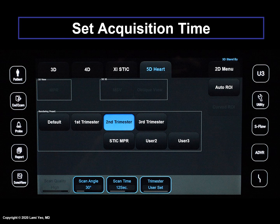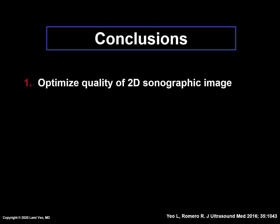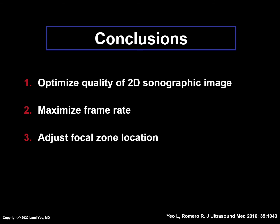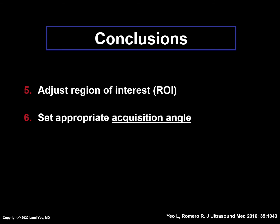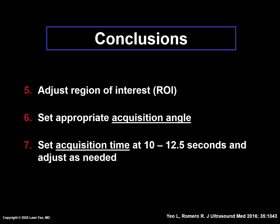This screen panel on an ultrasound machine shows where the volume acquisition time is adjusted — here it has been set for 12 seconds. In conclusion, before obtaining STIC volume datasets for the FINE method, it is essential to enhance the quality of the two-dimensional sonographic image. One should maximize the frame rate by decreasing the depth, sector width around the heart, and the number of focal zones to a single zone. The focal zone should be placed at or below the level of the fetal heart in the imaging window, and the cardiac image should be magnified to improve visualization of the cardiac anatomy. The region of interest box should be as small as possible to maximize the frame rate and improve temporal resolution. One should set the appropriate acquisition angle, and we recommend setting the acquisition time between 10 and 12.5 seconds with adjustments as needed.